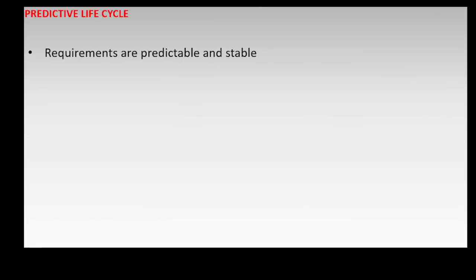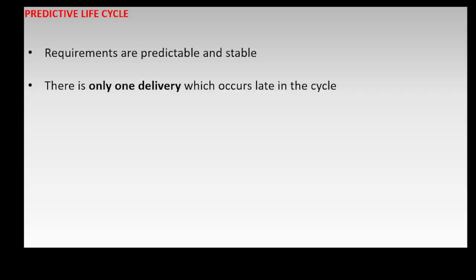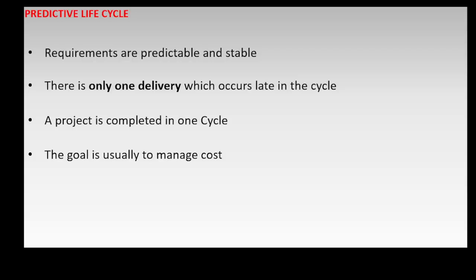In the predictive life cycle, requirements are predictable and stable, and changes are not expected. There is only one delivery, which occurs late in the cycle at the deployment phase. A project is completed in one cycle, and the phases within it are performed once and occur in sequence.